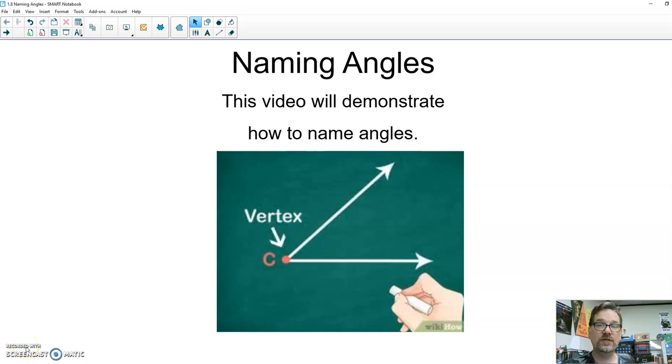Alrighty, Patriots. In the last lesson, we talked about classifying angles. Classifying angles is telling me if an angle is acute, right, obtuse, or straight. Now we're going to name angles.